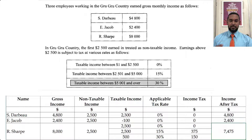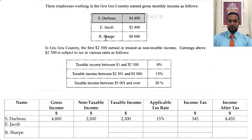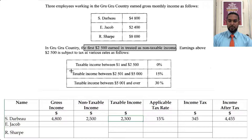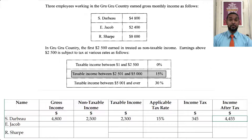Now I want to show you how I interpreted the question differently — what I think the correct version should be. For S. Darbo under my interpretation: gross income is $4,800, subtract the non-taxable $2,500, leaving taxable income of $2,300. That $2,300 is above the non-taxable allowance and below $5,000, so it is taxed at 15%, giving income tax of $345. Subtracting from $4,800 gives income after tax of $4,455.